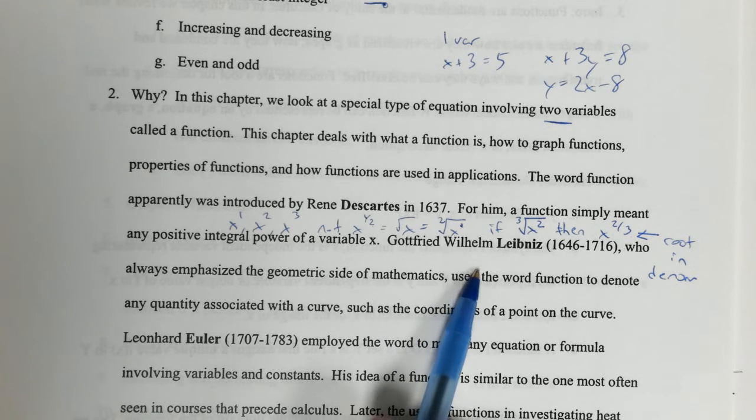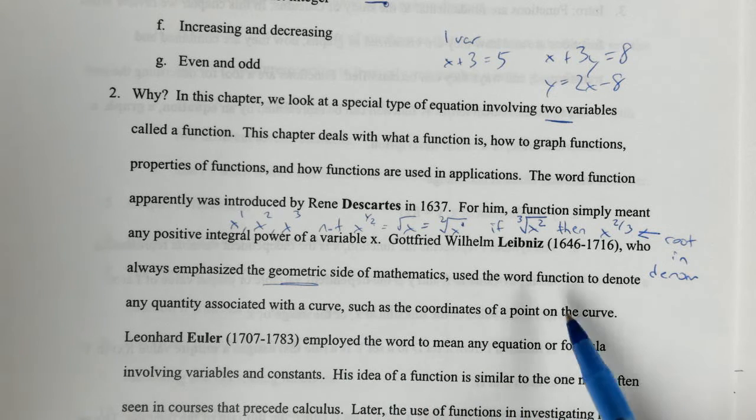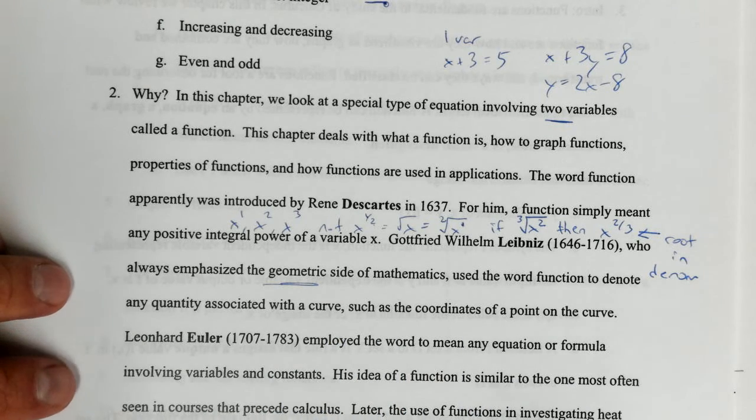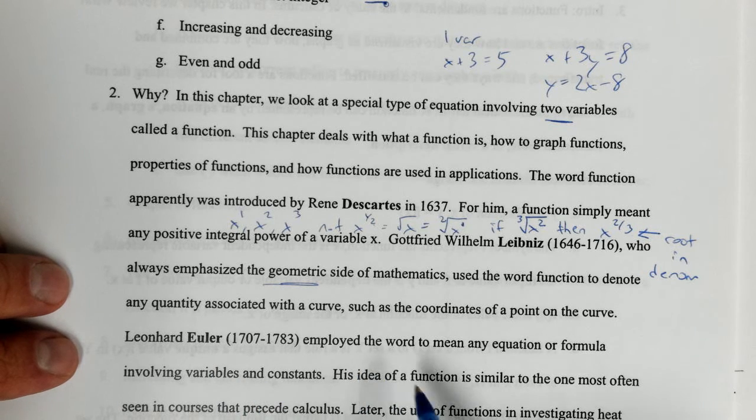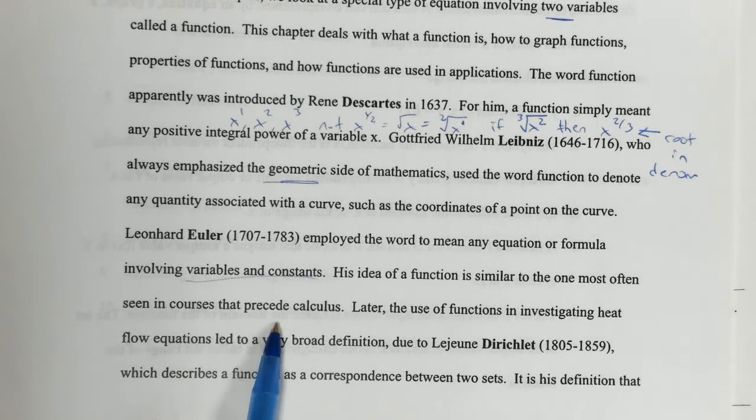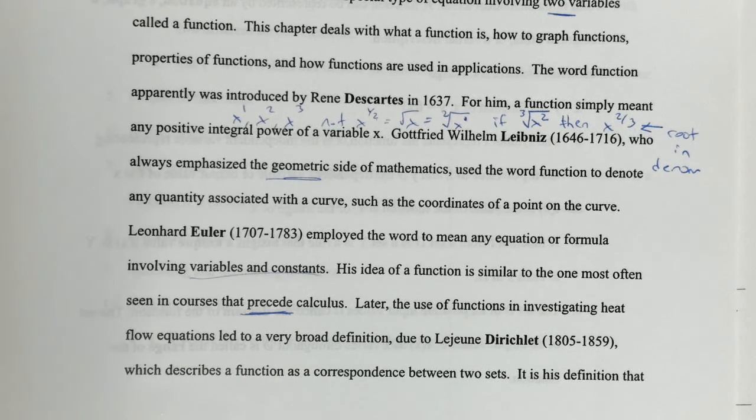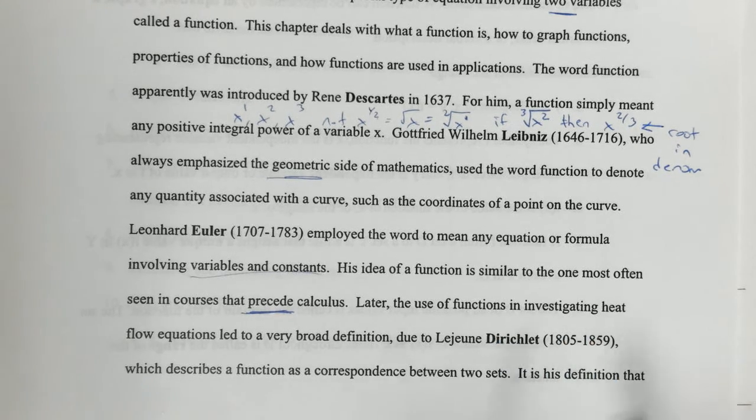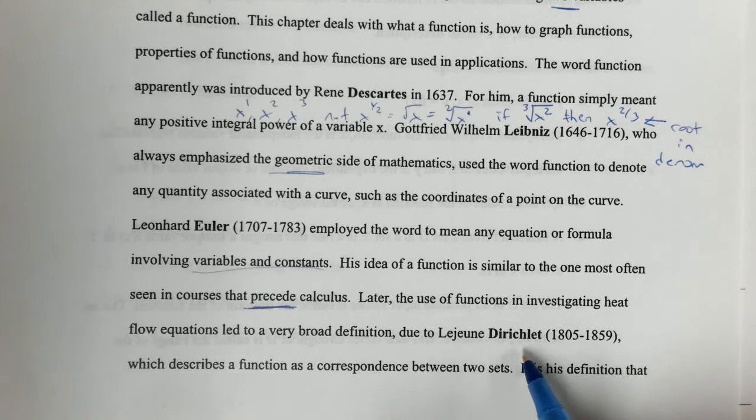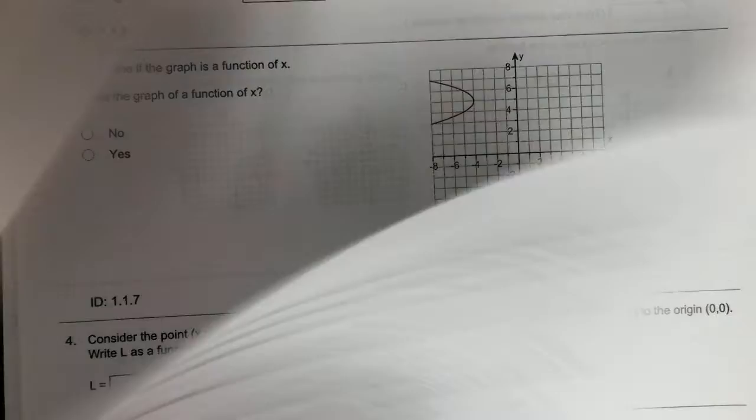Now, moving on, Gottfried Wilhelm Leibniz, who also emphasized the geometric side, or graphing side, used the word function to denote any quantity with a curve, such as coordinates on a point on a curve, like a parabola. Leonard Euler employed the word to mean any equation or formula involving variables and constants. His idea is similar to the one most often seen in pre-calculus, in Algebra 2, anything before calculus.